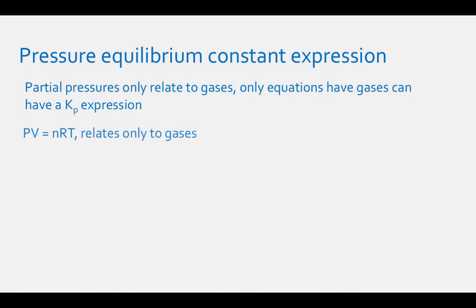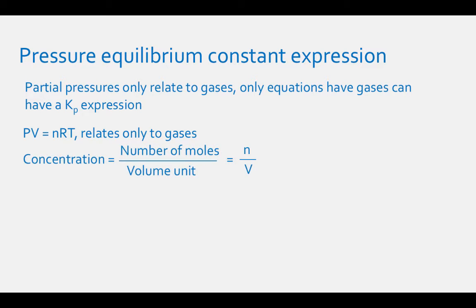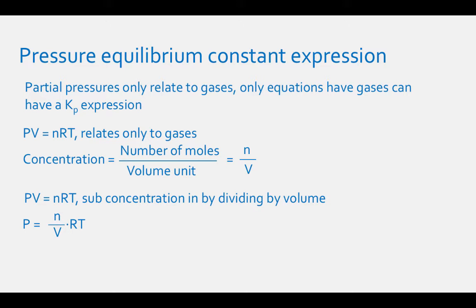Another equation that relates only to gases is the ideal gas equation, PV equals nRT. Concentrations are represented as moles divided by volume, or n/V. Rearranging the ideal gas law by dividing each side by volume gives pressure equals moles over volume times R times T. Since moles over volume equals concentration, this reduces to pressure equals concentration times the gas constant times temperature.